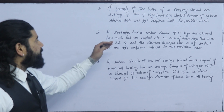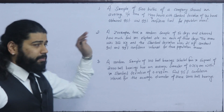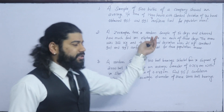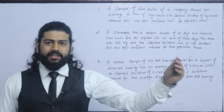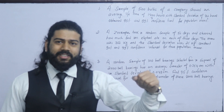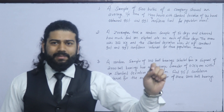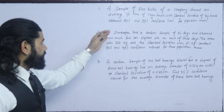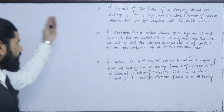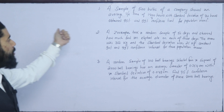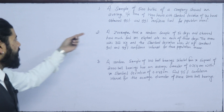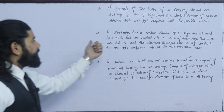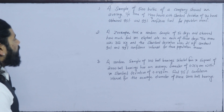For 95% confidence, the error is 5%. For 99% confidence, the error is 1%. The Z-value at 95% confidence is 1.96, and the Z-value at 99% confidence is 2.57. These are constant values.